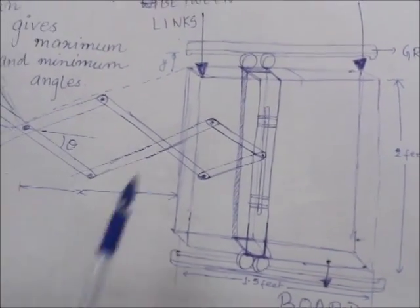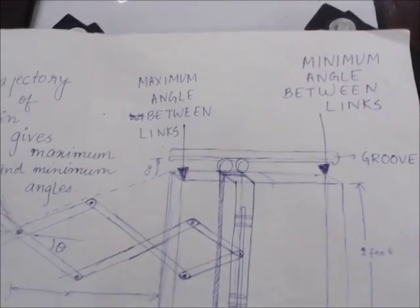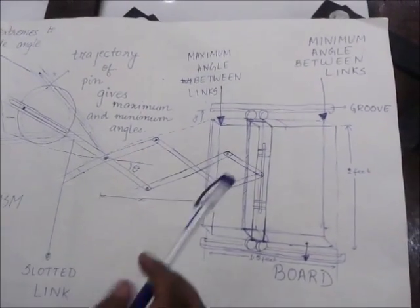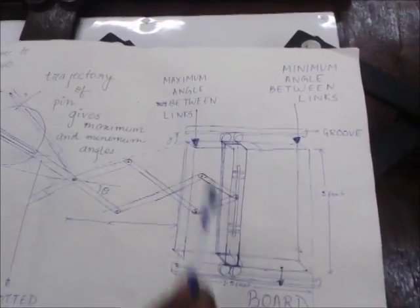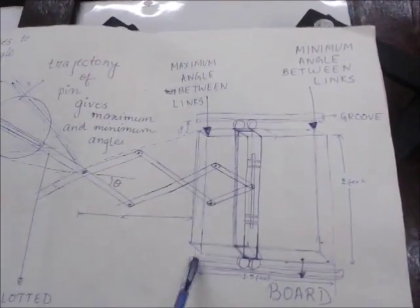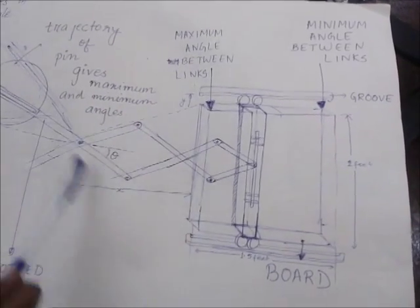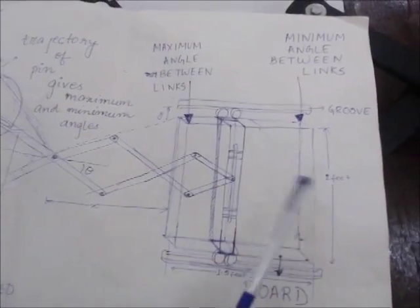Then we took into consideration the various constraints which should be taken care of while assigning the dimensions. Firstly we saw that when the eraser is at this extreme of the whiteboard, the angles between the links would be maximum. And when it is at the other extreme, the angles between the links would be minimum.